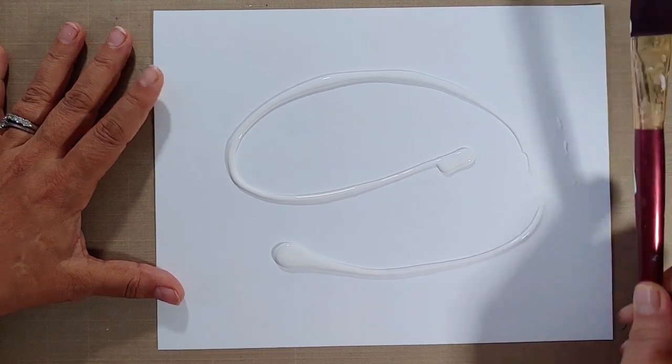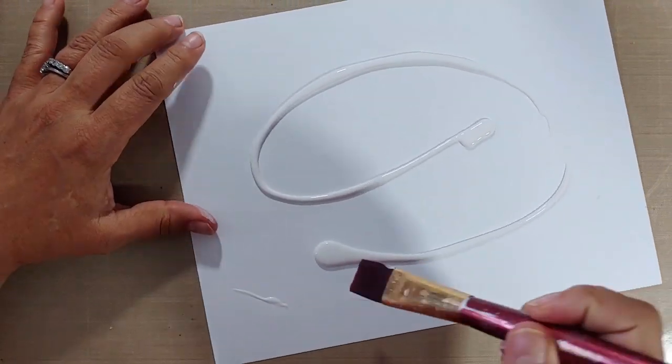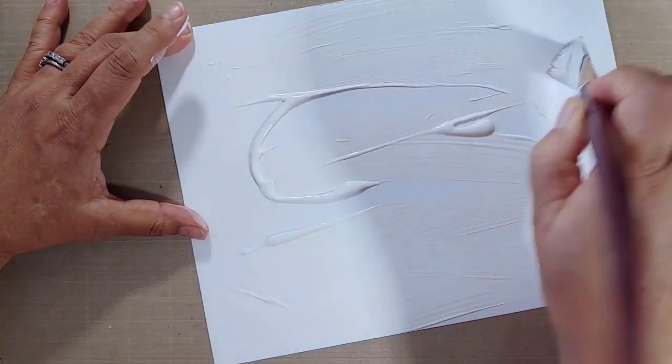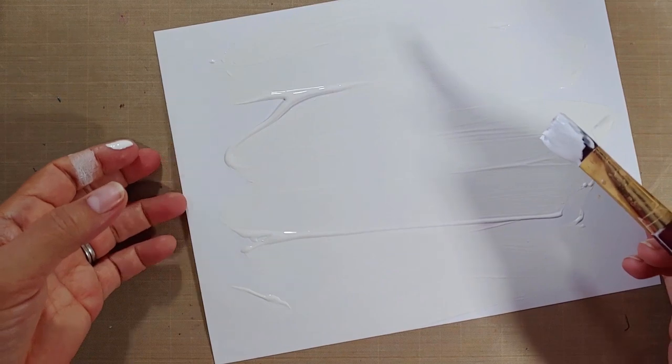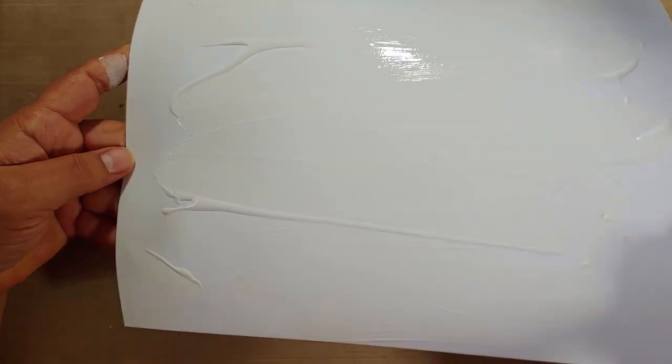So here we have some gesso. You can see I was pretty liberal with putting it down and I'm gonna go ahead and just basically cover my sheet. I'm gonna speed through this really quick. I'm gonna show you two ways of applying gesso but look at that amazing texture.